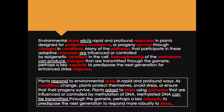And I changed 'survival' to 'survive.' Protection, avoidance, and survival are nouns formed from root verbs — so we changed them back to verbs and introduced an agent into the sentence. Reading it again: 'As conditions change, plants protect themselves, avoid stress, or ensure that their progeny survive.' I've taken the first sentence and made it into two sentences.